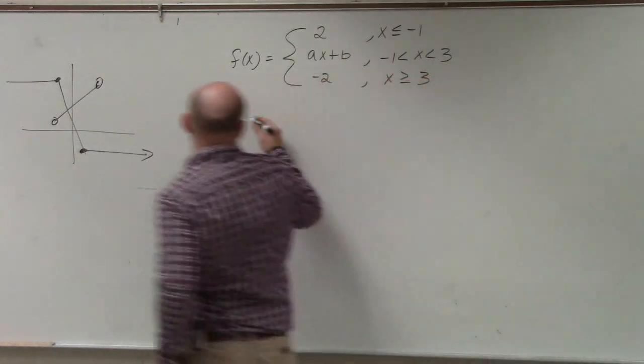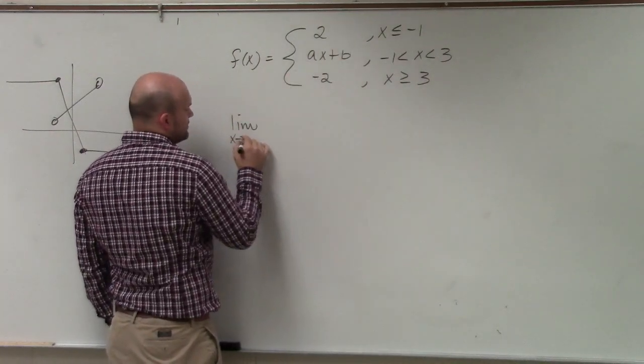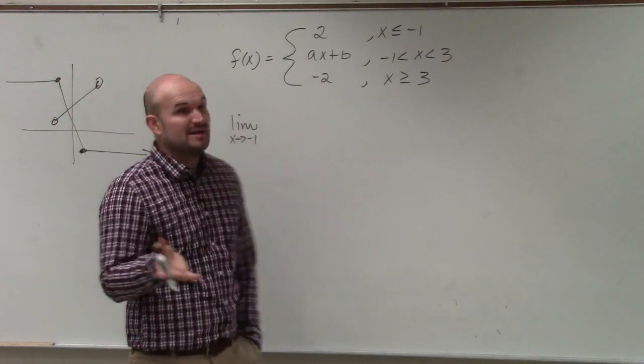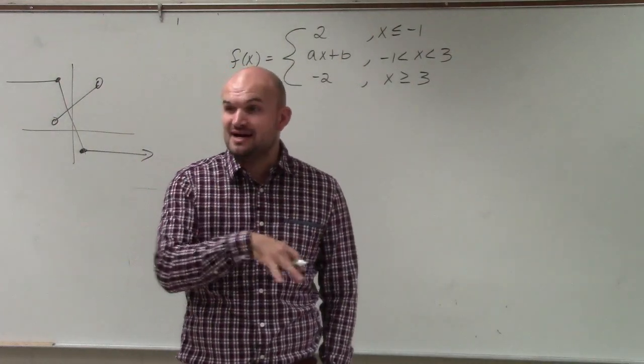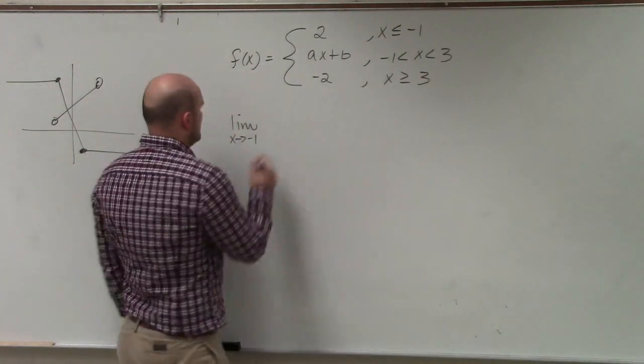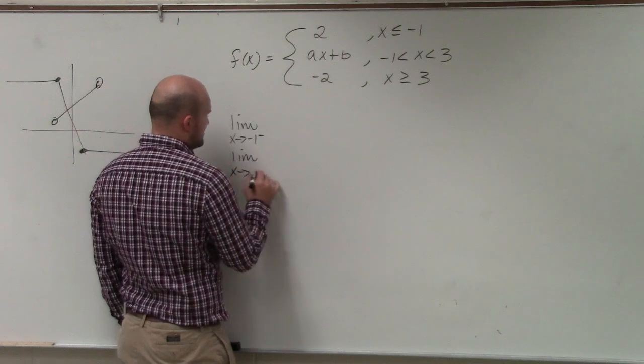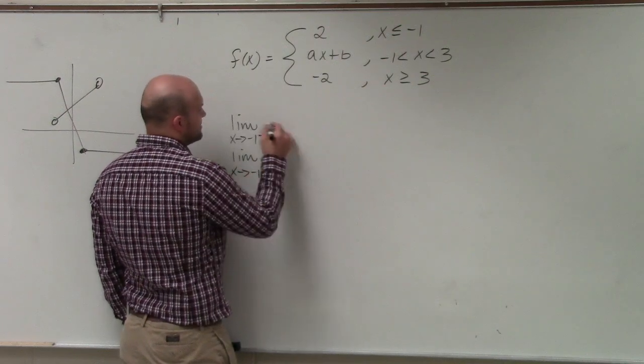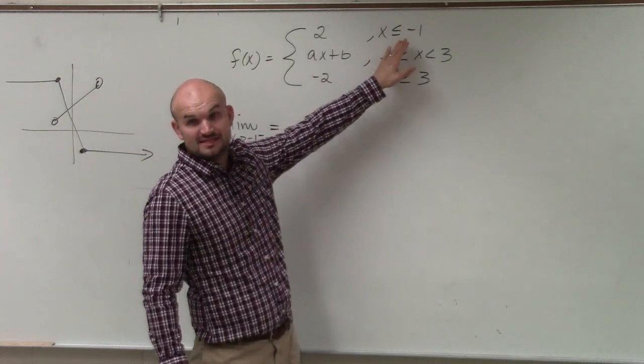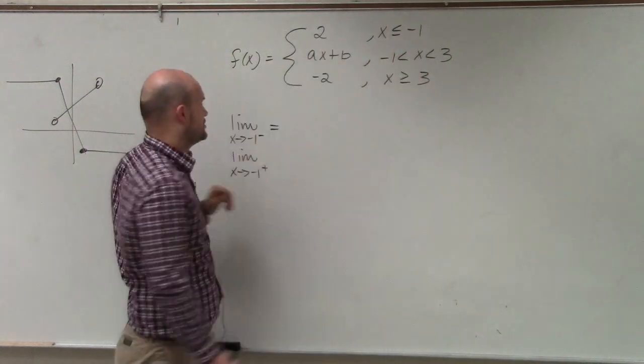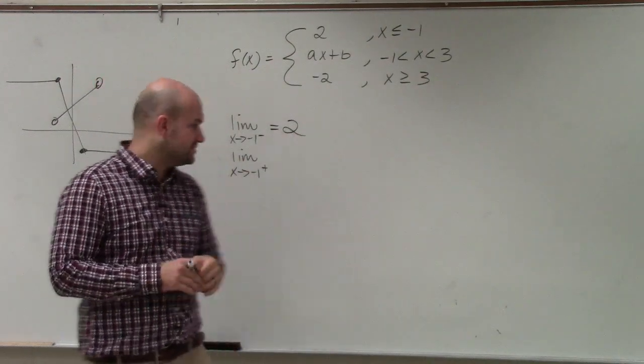So again, first thing we need to do is evaluate the limit at X equals negative one. We need to make sure that limit exists, so therefore, to do that, we need to check the limit from the left-hand side and from the right-hand side. So let's do the limit from the left and the limit as X approaches negative one from the right. Well, from the left is going to be the values that are less than negative one, which is just two. The limit of any constant is obviously just going to be two there.